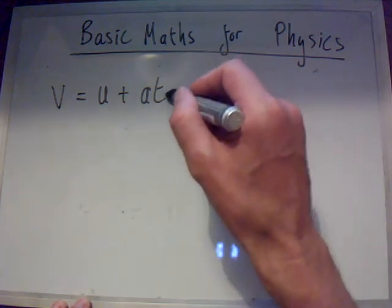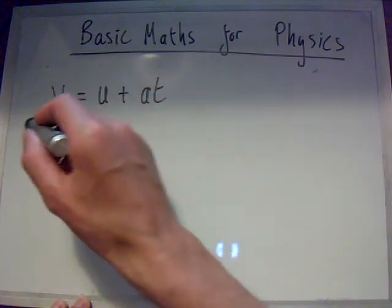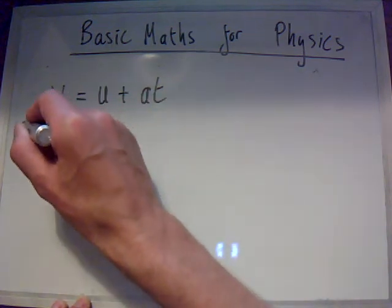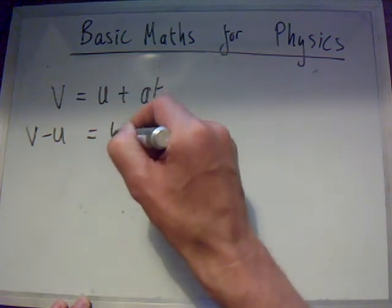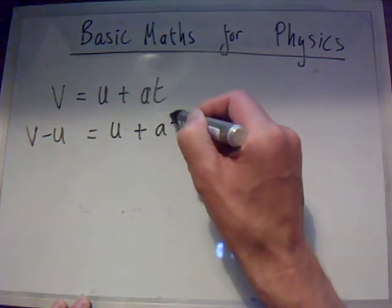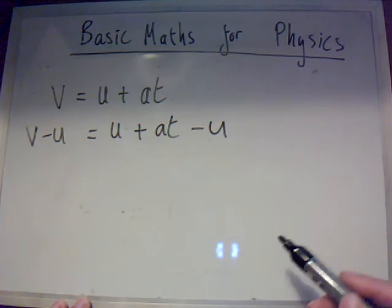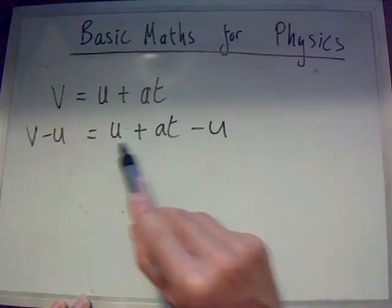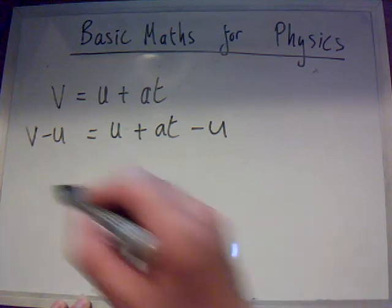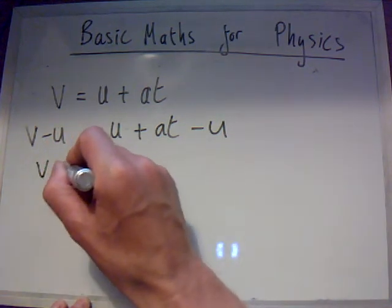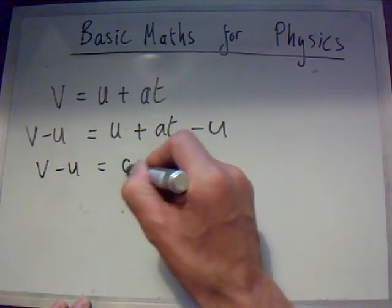So let's take U from both sides. That becomes V minus U is equal to U plus AT minus U. Now, U and minus U will cancel out. U minus U is zero. So that gives us V minus U equals AT.